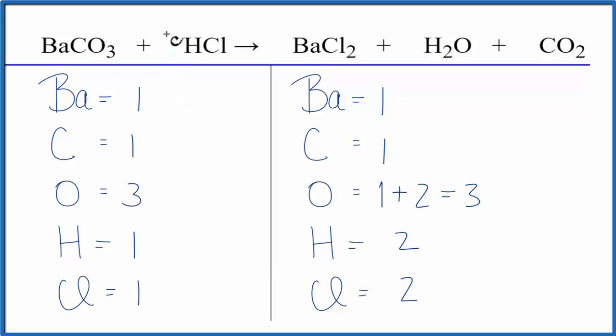And that's pretty easy because we can put a two as our coefficient in front of HCl. This two, it applies to everything. So we have one hydrogen times two. That gives us two hydrogens.